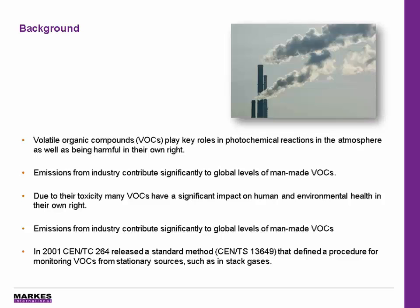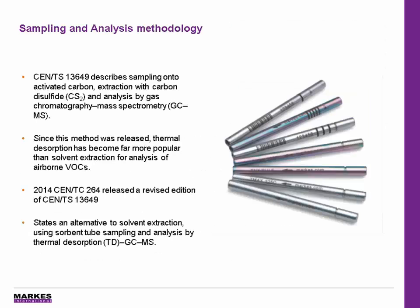This method was called CEN TS 13649, and will be the topic of our discussions today. CEN TS 13649 involved the collection of airborne vapors onto glass tubes packed with activated carbon. Following this, the analytes were extracted with carbon disulfide, then analyzed typically using gas chromatography mass spectrometry.